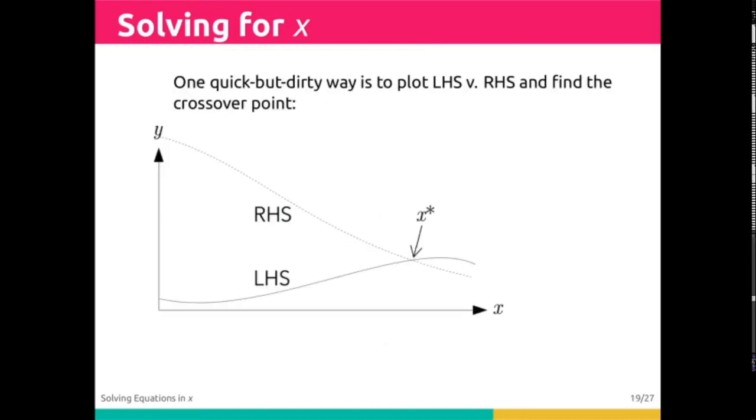So we're going to consider this to be a quick but dirty way to solve these problems. If we plot the left-hand side and the right-hand side and find the crossover point, then we have found a solution to this equation. Where these lines cross represents a place where x satisfies both sides of the equation. Thus, both sides are equal, thus an equation equating two things, the left-hand side and the right-hand side, becomes true.